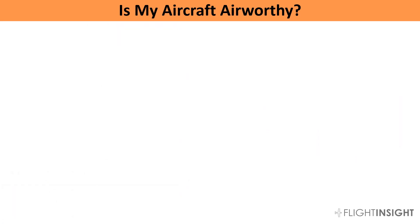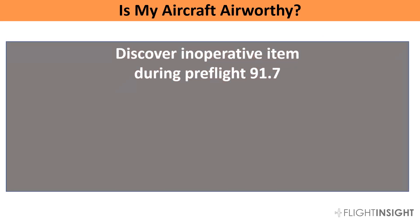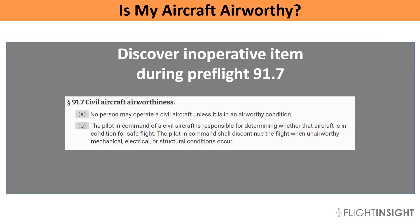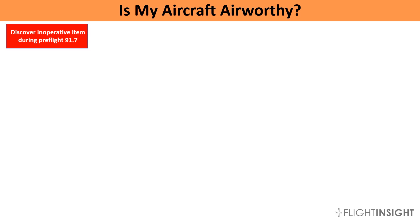Let's go through this methodically. The first thing is we discover an inoperative item during our pre-flight of the aircraft. We've cited 91.7 here. This reg states that we can't fly an aircraft unless it's airworthy, and that it's the pilot in command's responsibility to determine if it's safe for flight. It's not up to the mechanic, aircraft owner, or your instructor who's not going up with you — it's up to you, the pilot. So once we've found an item that's not working, we need to figure out if it's going to ground us.